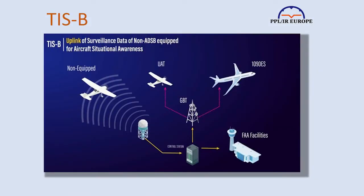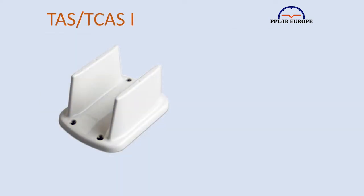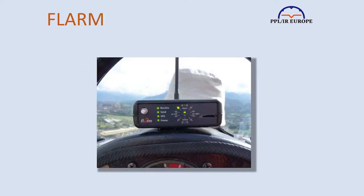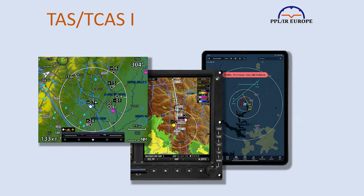In the States they have TIS-B, which gathers the positions of all aircraft with a transponder and retransmits it as ADS-B. Unfortunately in Europe we don't have that facility, so we are largely left with aircraft-to-aircraft peer-to-peer systems. The system which calculates by triangulation the position of squawking aircraft is called TAS or TCAS-1. Lighter aircraft, microlights and hang gliders are increasingly likely to carry self-contained ADS-B transmitters, which transmit their lat/long. Gliders use FLARM, though they too are increasingly also using ADS-B. TAS receivers are built into the airframe, certified and expensive, and are also capable of picking up ADS-B.